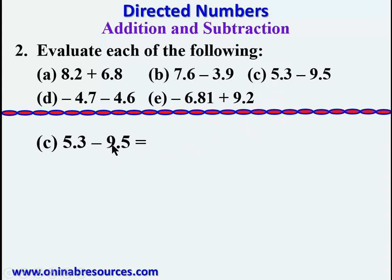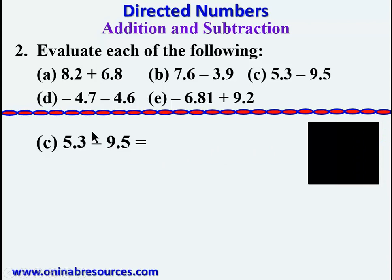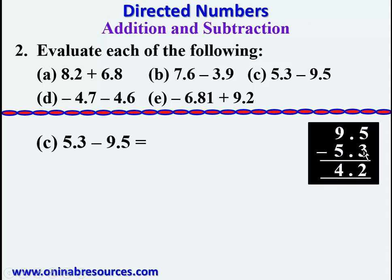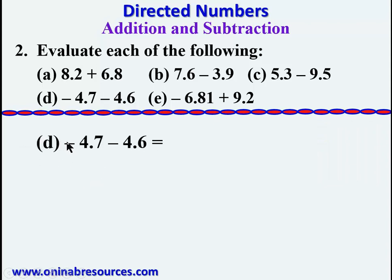For part c: 5.3 minus 9.5. This is subtracting a large number from a small number, so we treat it normally as 9.5 minus 5.3. 5 minus 3 gives 2, and 9 minus 5 gives 4, giving 4.2. Since the larger minus the smaller is 4.2, the smaller minus the larger gives negative 4.2.